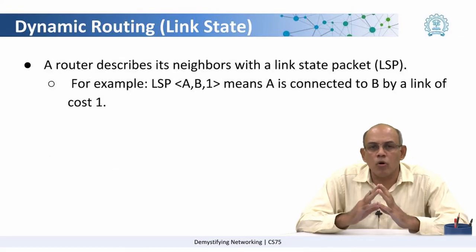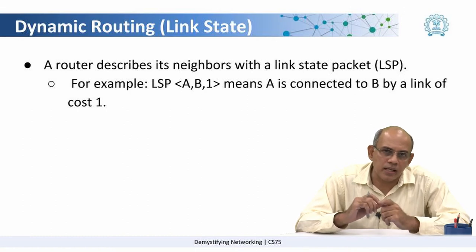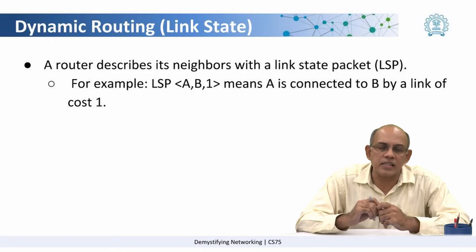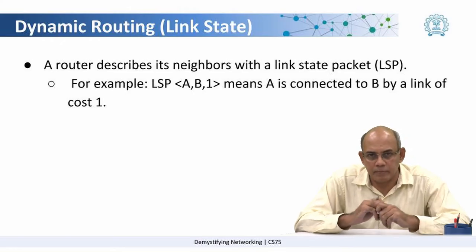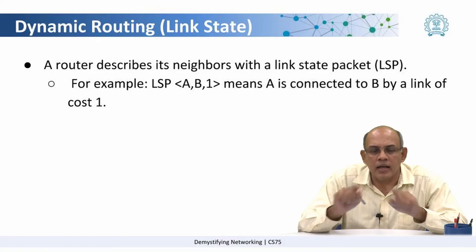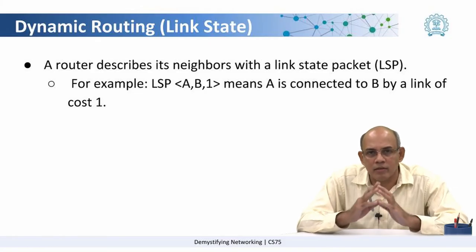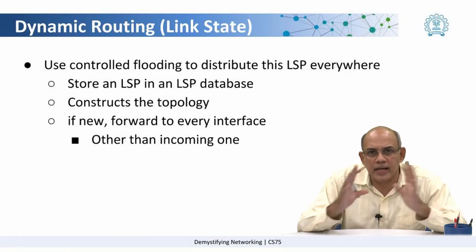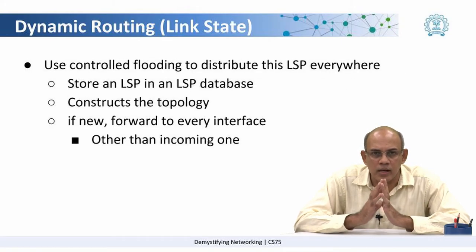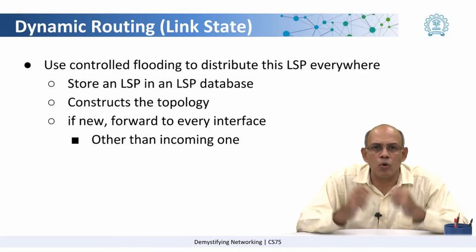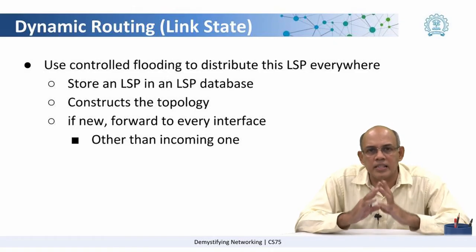To be more precise, a router describes the state of its links using a link state packet. A link state packet could be something like A, B, 1 — which basically means A is connected to B with a cost of 1. These link state packets are flooded throughout the network, and any router which receives one stores it in what is called an LSP database.